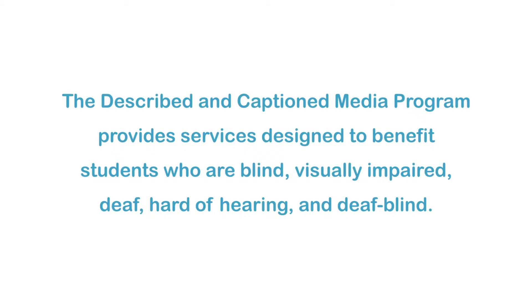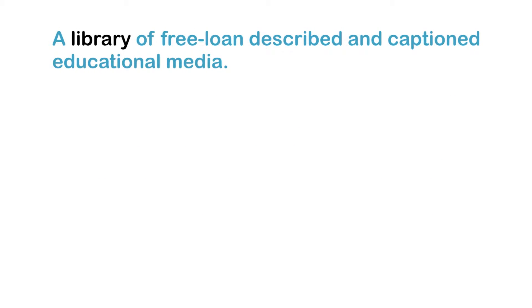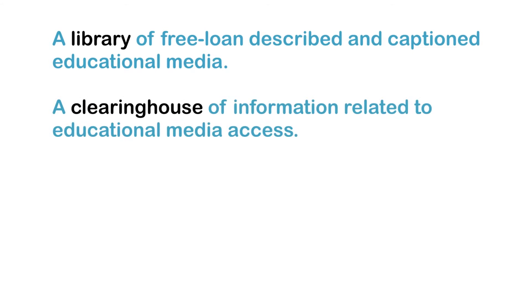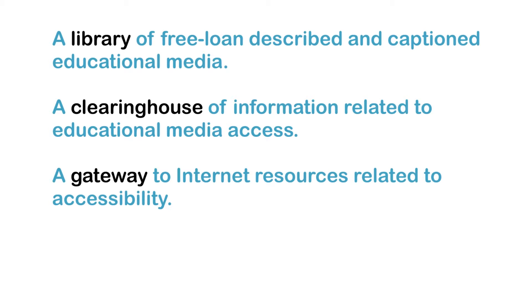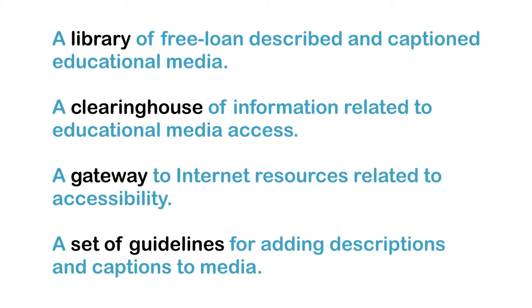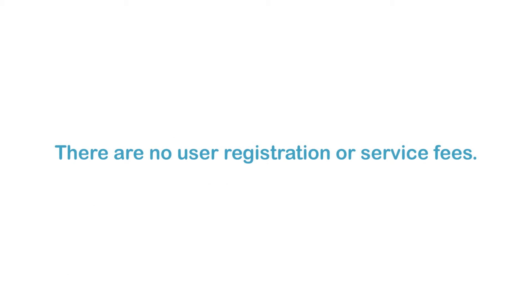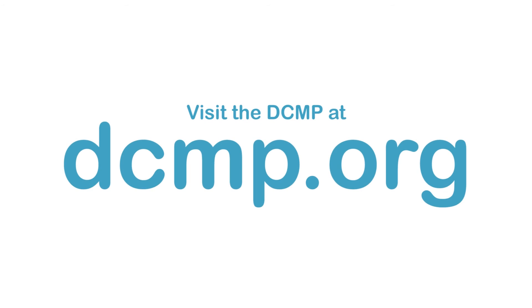The Described and Captioned Media Program provides services designed to benefit students who are blind, visually impaired, deaf, hard of hearing, and deafblind. These services include a library of free loan described and captioned educational media, a clearinghouse of information related to educational media access, a gateway to Internet resources related to accessibility, and a set of guidelines for adding descriptions and captions to media. There are no user registration or service fees. Visit the DCMP at DCMP.org.